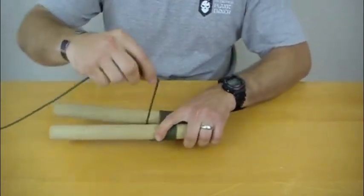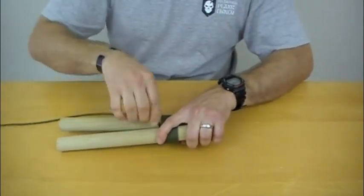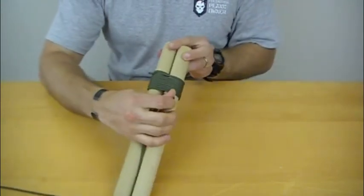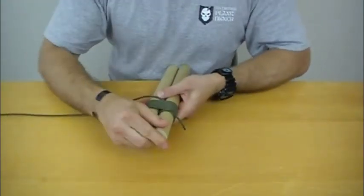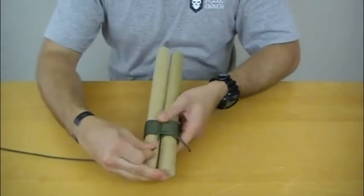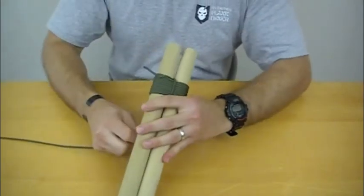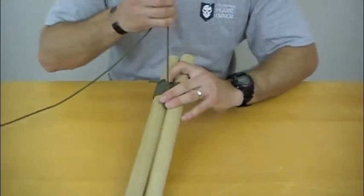So now what you're going to do is you're going to go inside the two posts with that last wrap of your working end here, and we're going to make two frapping turns around the middle. So one, two.